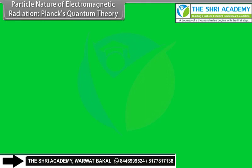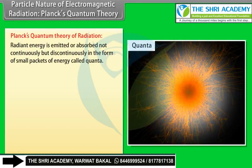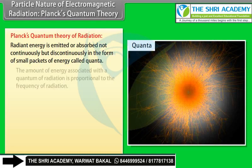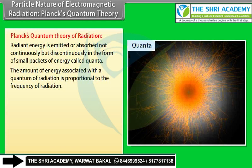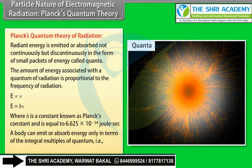Particle nature of electromagnetic radiation — Planck's Quantum Theory: Radiant energy is emitted or absorbed not continuously but discontinuously in small packets called quanta. The energy of a quantum is proportional to frequency: E = hν, where h is Planck's constant = 6.625 × 10⁻³⁴ joule·second. A body can emit or absorb energy only in integral multiples of a quantum: E = Nhν, where N = 1, 2, 3, 4, etc.